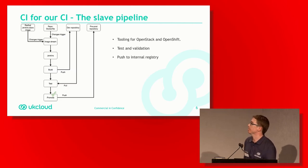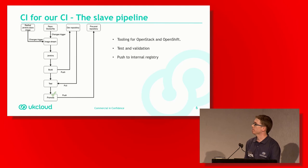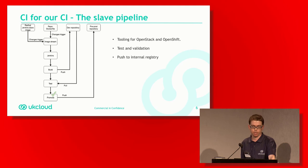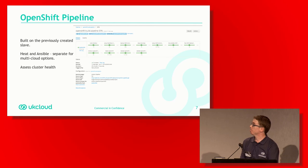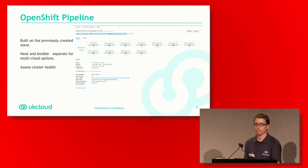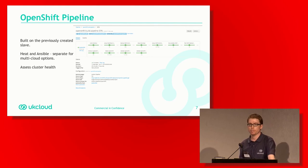Moving on to the CI pipeline itself — we use a pipeline to build our CI tooling as well. Our Jenkins slave that talks out to OpenShift and OpenStack is built inside OpenShift itself. We pull the upstream Jenkins slave image, add our own tooling on top, validate that, and then push it to the internal repository for use in subsequent deployments. We've kept infrastructure deployment and application deployment separate because as a multi-cloud provider, we need to deploy on multiple different cloud platforms and don't want those too tightly coupled.